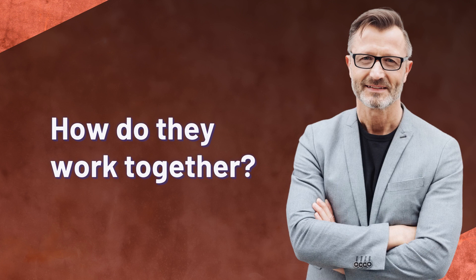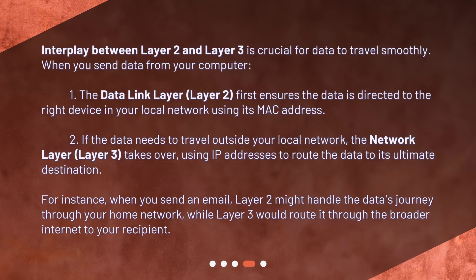How do they work together? The interplay between layer 2 and layer 3 is crucial for data to travel smoothly. When you send data from your computer: first, the data link layer — layer 2 — ensures the data is directed to the right device in your local network using its MAC address. Then, if the data needs to travel outside your local network, the network layer — layer 3 — takes over, using IP addresses to route the data to its ultimate destination.